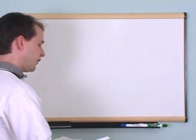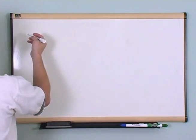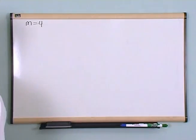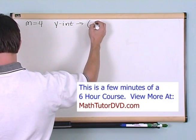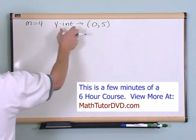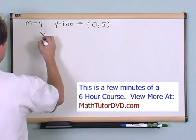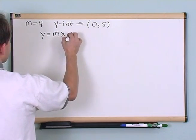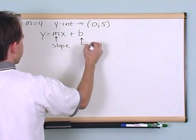The first thing we want to do is a little bit of a review. What if I give you two pieces of information about a line: the slope is equal to four, and the y-intercept is given by (0, 5). The question is: given these two pieces of information, write down the equation of the line. The general form — the easiest equation of a line to remember — is y = mx + b, where m is the slope and b is the y-intercept.